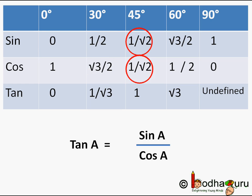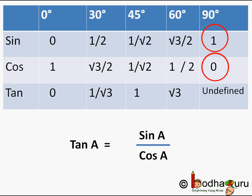tan(45°) = (1/√2) / (1/√2) = 1. tan(60°) = (√3/2) / (1/2) — the 2s cancel — giving √3. tan(90°) = sin(90°) / cos(90°) = 1/0, which is undefined, so tan(90°) is an undefined value.